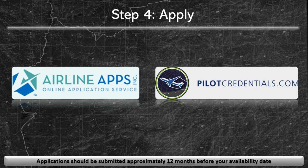Once you have everything put together, you can start the application process. Applications should be submitted approximately 12 months before your availability date. It's helpful to have a printout of your latest security clearance application when filling out airline applications for things like address history, employment history, and supervisor contact information. The most popular airline application sites are airlineapps.com and pilotcredentials.com. Some airlines, such as FedEx and Southwest, recommend only using their own site. More importantly, these sites have very different accounting methods when asking pilots to report their time.